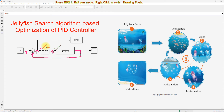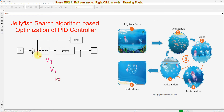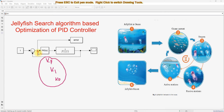Here we are going to optimize the parameters of the PID controller: KP, KI, and KD, by minimizing the error. We are going to minimize the mean absolute error, which will be considered as the objective function. So we have to find the optimal values for KP, KI, and KD by minimizing the mean absolute error, and for that we are going to use the Jellyfish Search Algorithm.